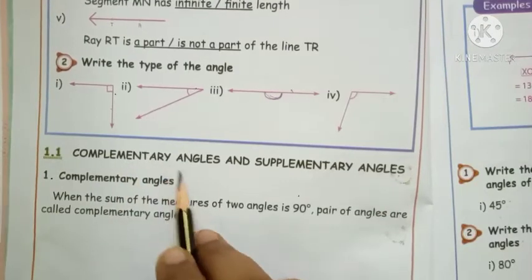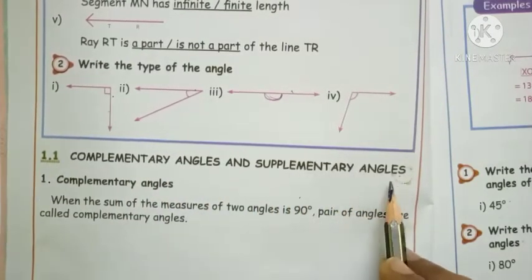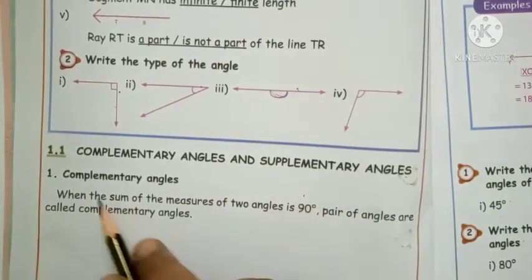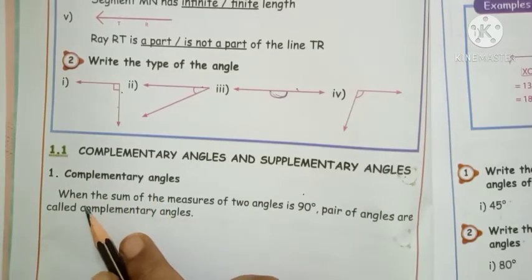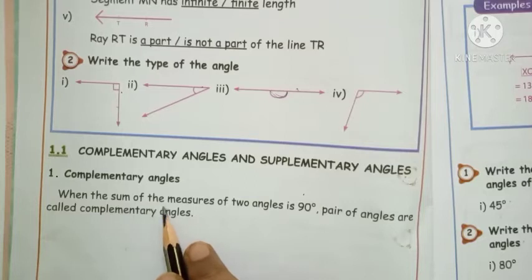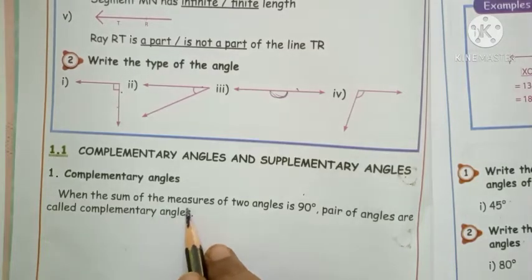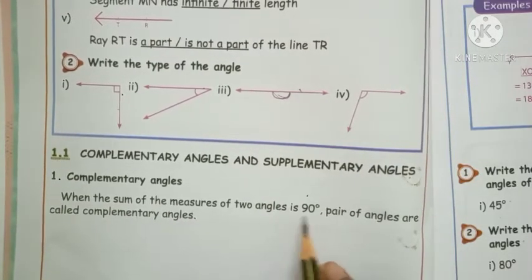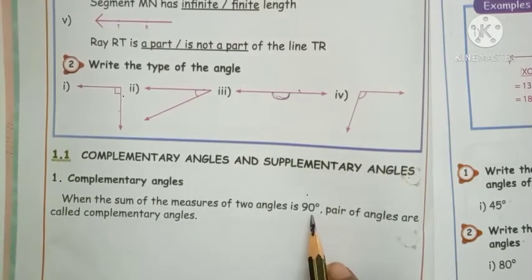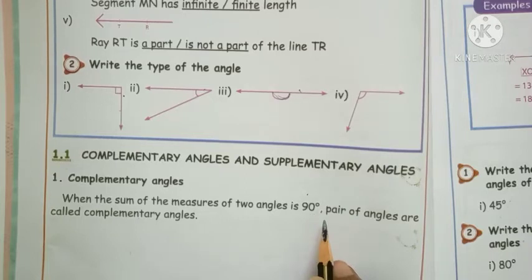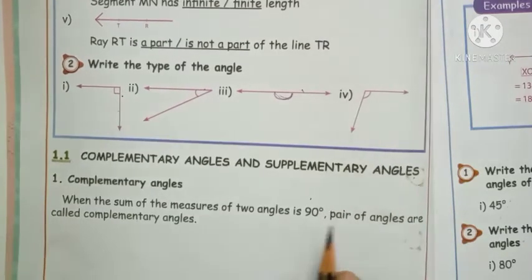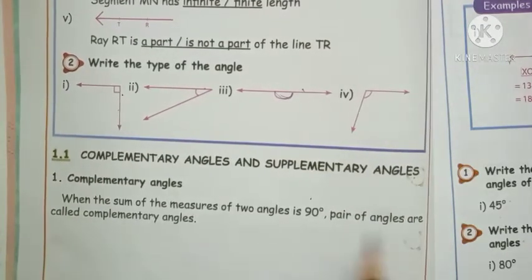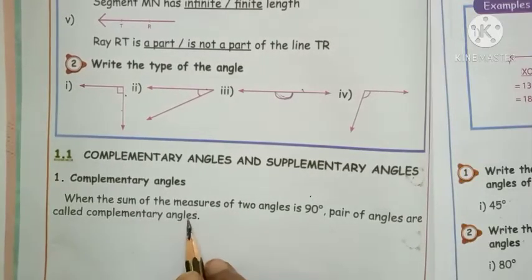Next: complementary angle and supplementary angle. When the sum of the measures of two angles is ninety degrees, that pair of angles is called a complementary angle.